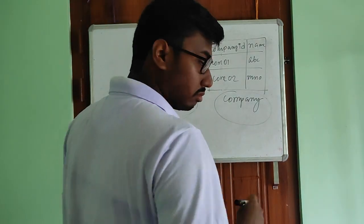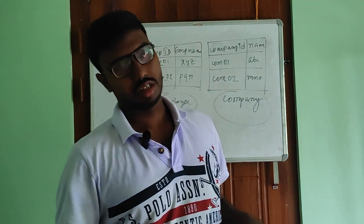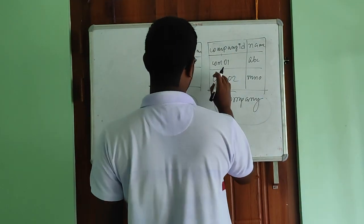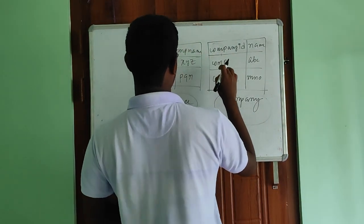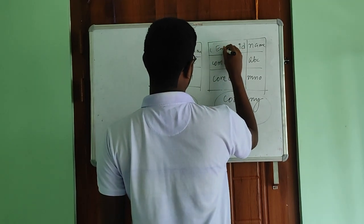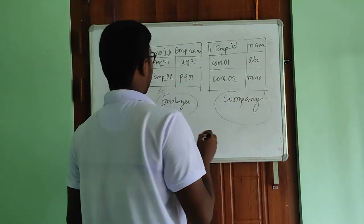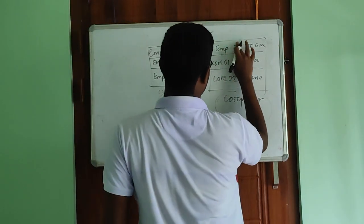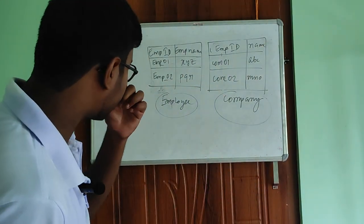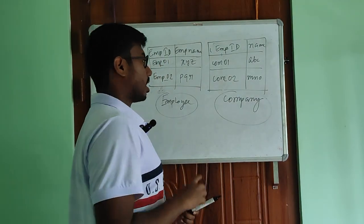In order to join tables there needs to be a common unique column. Let's name it employee ID so that we can join the tables, because if there is no common column we cannot join them. Now we are learning outer join. First of all, let us look at the left join.